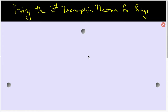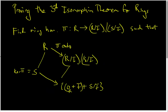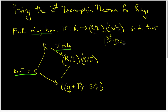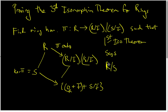In this video, we continue working on the proof of the third isomorphism theorem for rings. I want to remind you of where we are at. Our basic strategy is that we want to find a ring homomorphism π from R to the target ring R mod I modded out by S mod I. We want the homomorphism to be onto, and we want the kernel of π to be equal to S. Because if we have these three things satisfied, then the first isomorphism theorem says that R mod the kernel of π — in other words, R mod S — is isomorphic to the target ring R mod I modded by S mod I. And that's what we want.